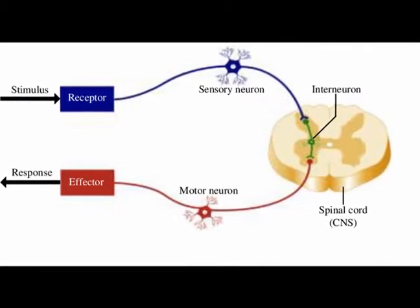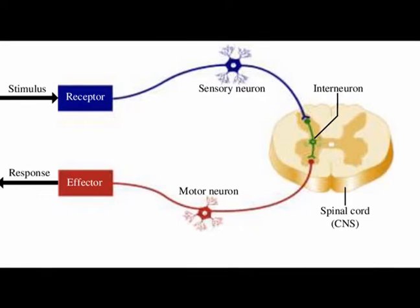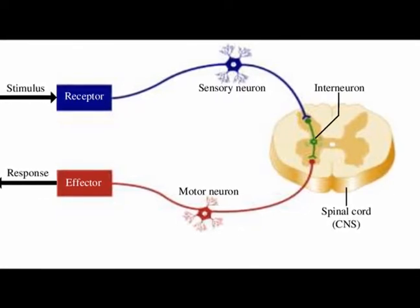The reflex arc is a monosynaptic reflex where only two neurons are involved. A sensory neuron provides the afferent component and a motor neuron at the spinal cord provides the efferent component.